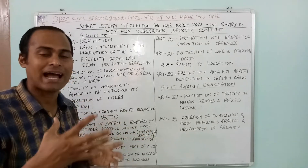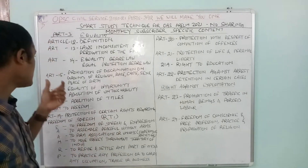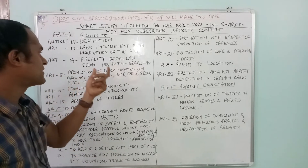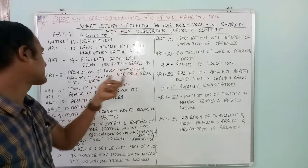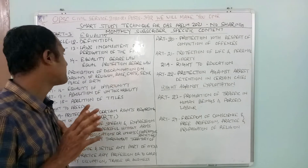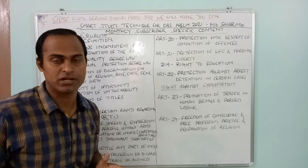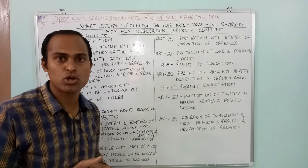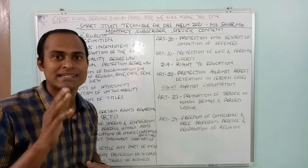Article 15 deals with prohibition of discrimination on the grounds of religion, race, caste, sex, and place of birth. There cannot be any kind of discrimination. As I have mentioned in many of my videos, being a bureaucrat you must not practice casteism.